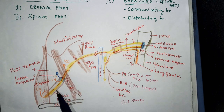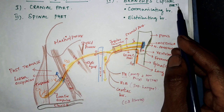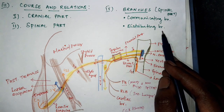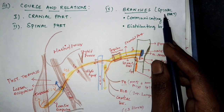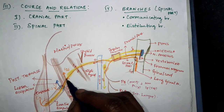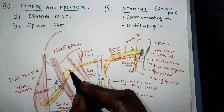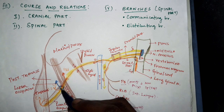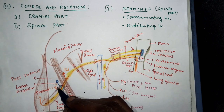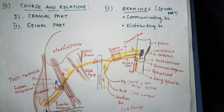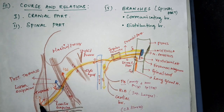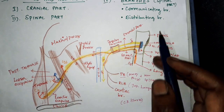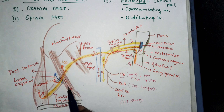The spinal part gives off two branches: a communicating branch and a distributing branch. For the communicating branch: it gives one communicating branch to C2 fibers just deep to the sternocleidomastoid; within the posterior triangle it gives communicating branches to C2 and C3; and deep to the trapezius it gives a communicating branch to C3 and C4. The distributing branch gives muscular branches to the sternocleidomastoid and the trapezius muscle.